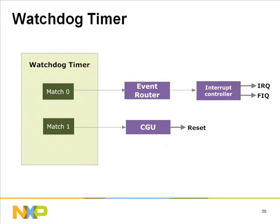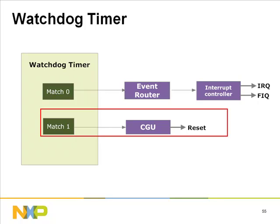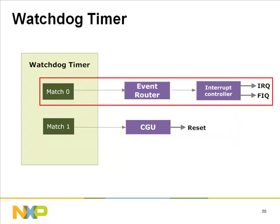The LPC 313X contains a watchdog module that can generate a software reset in case of a CPU or software crash, and can also be used as an ordinary timer. Configured with two 32-bit match registers: match one output generates an event to the CGU requesting a reset (watchdog mode); match zero output generates an event to the event router which generates an interrupt (timer mode).